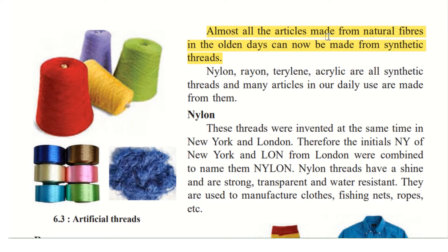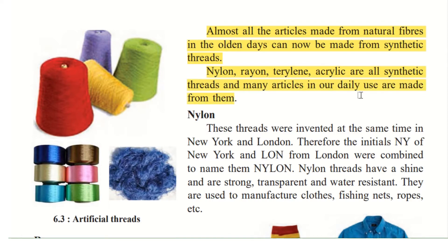Almost all articles made from natural fibers in the olden days can now be made from synthetic threads. In the olden days, they used naturally available materials — cotton, silk, jute, and other grass material. They did not know how to make synthetic threads. But nowadays we have nylon, rayon, terrylene, and acrylic — all synthetic threads — and many articles in our daily use are made from them.